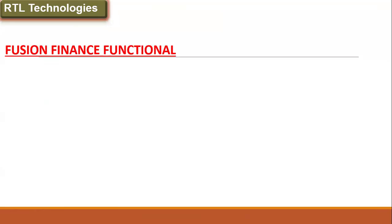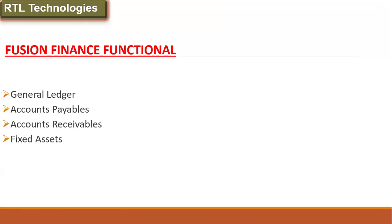The general modules we have in Fusion Financials that we are going to cover include: General Ledger, Account Payables, Account Receivables, Fixed Assets, Expenses, Fusion Taxes, and Cash Management. All of these we are going to cover through end-to-end implementation process.